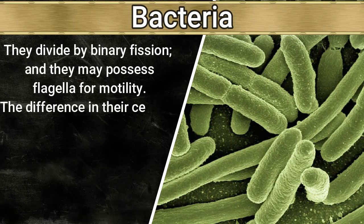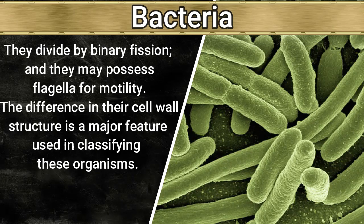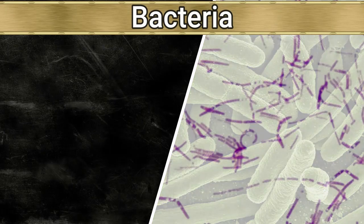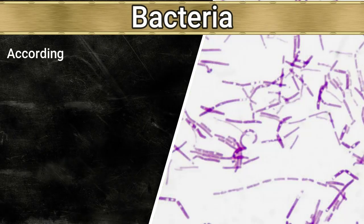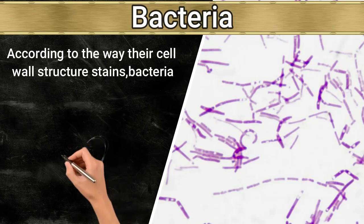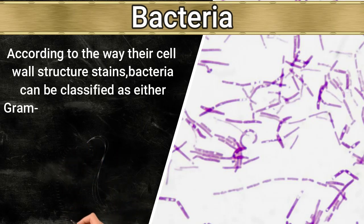The difference in their cell wall structure is a major feature used in classifying these organisms. According to the way their cell wall structure stains, bacteria can be classified as either gram positive or gram negative when using the gram staining technique.